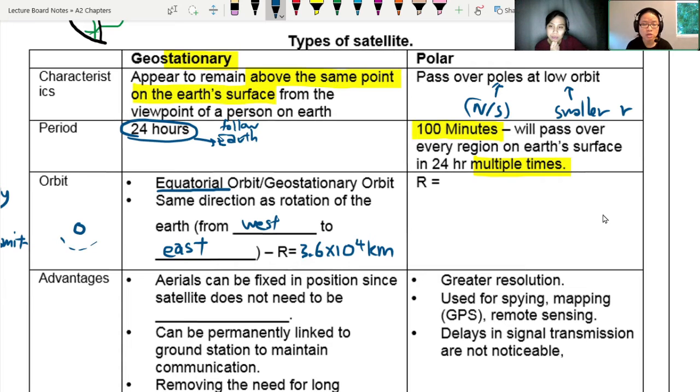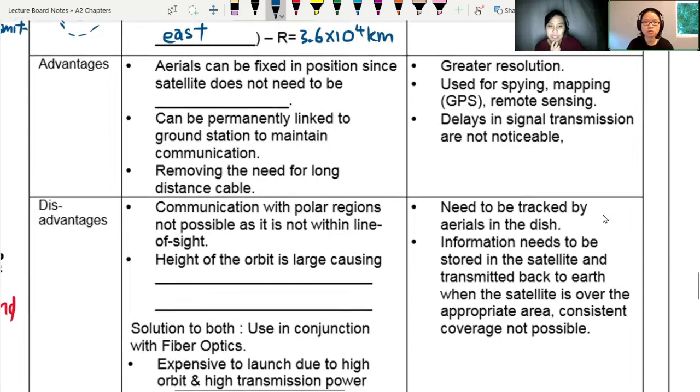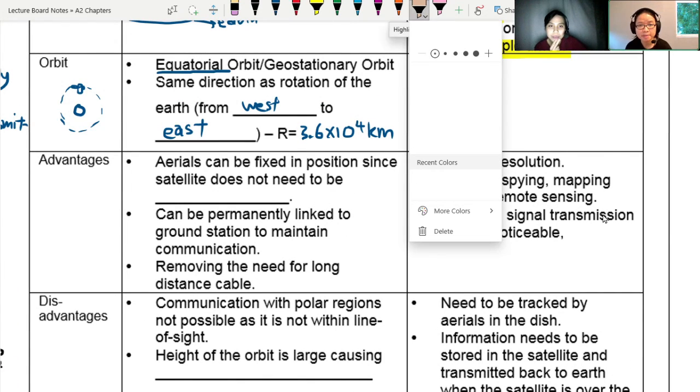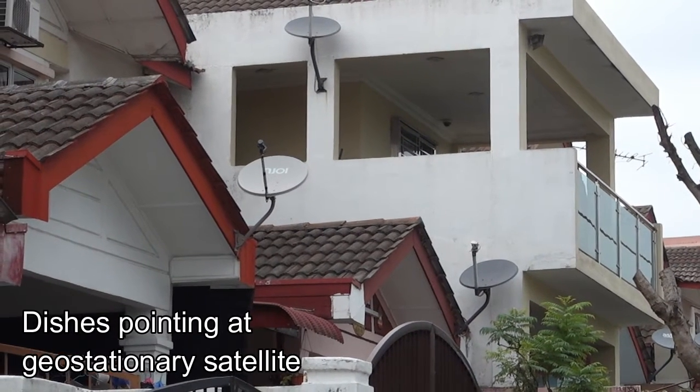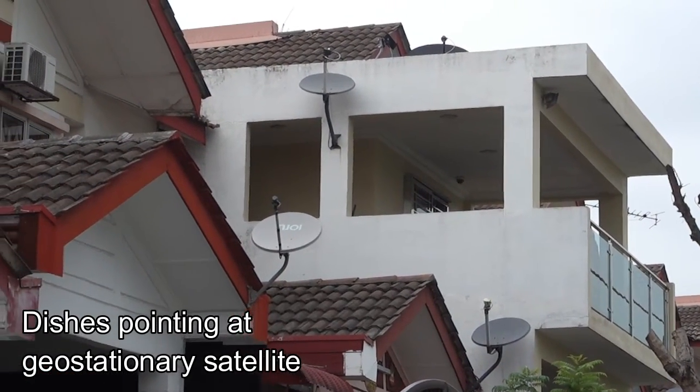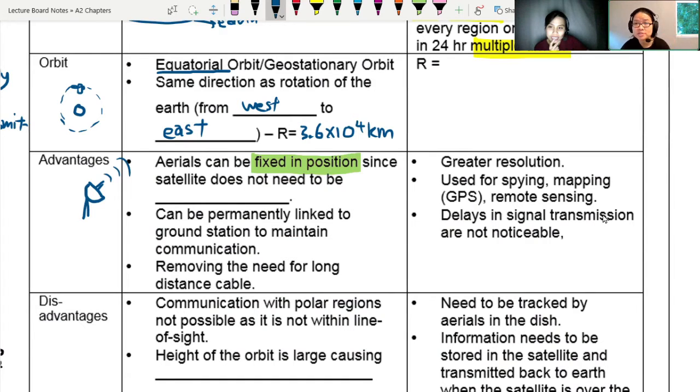We're going to also look at the advantages of a geostationary satellite. The advantages here is that the aerial can be fixed in position. You can align the satellite dish at a fixed position. You don't have to move here, move there. Because the satellite does not need to be tracked. The satellite is always there, very reliable. So it can be permanently linked to a ground station or a radio mast to maintain communication. We don't need cables anymore. Just put a satellite on top, they talk to each other.